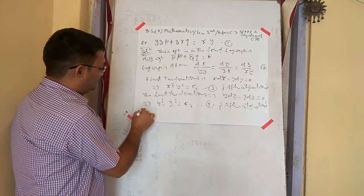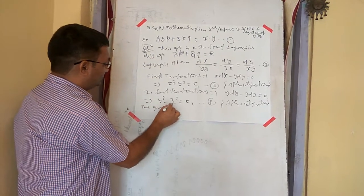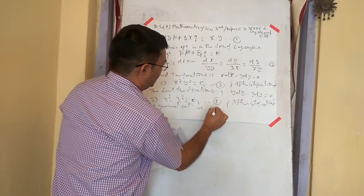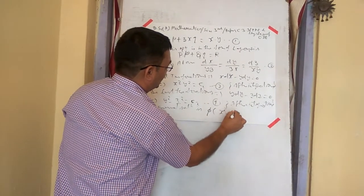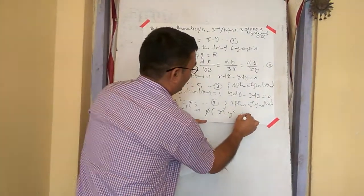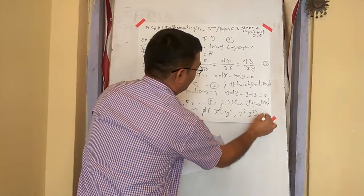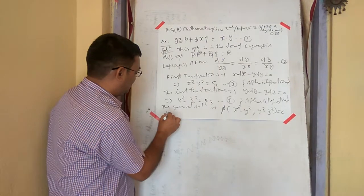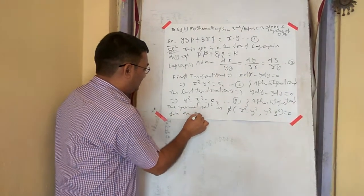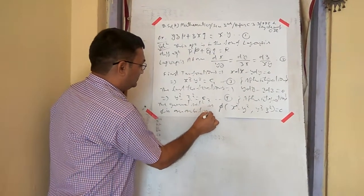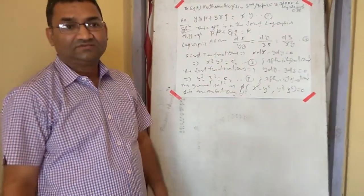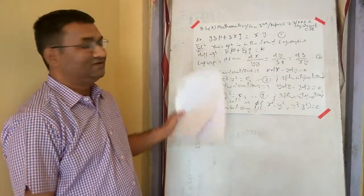So the general solution will be given as phi of X square minus Y square, Y square minus Z square is equal to 0, where phi is an arbitrary function. This completes the solution of this equation.